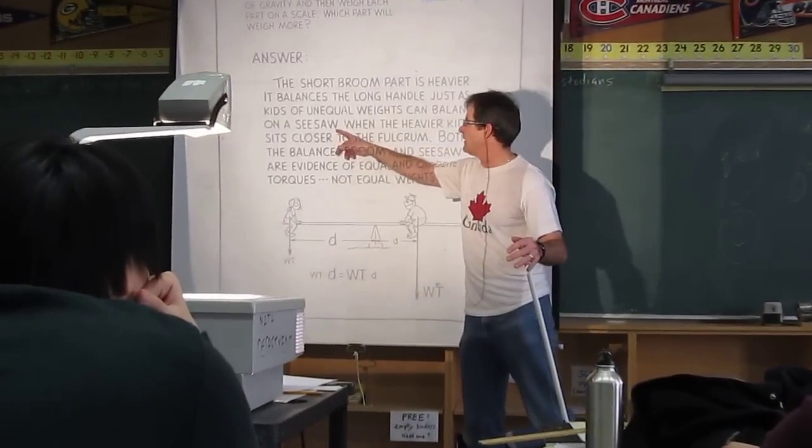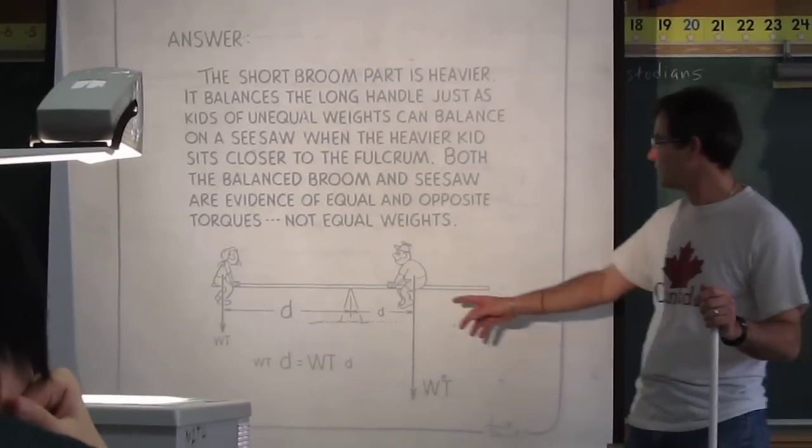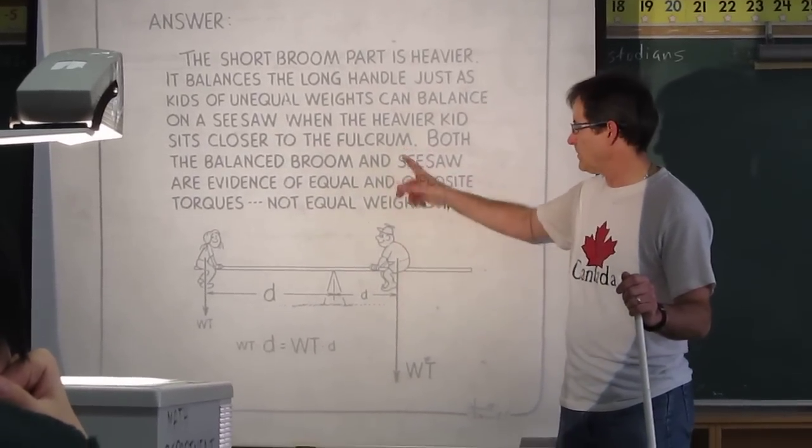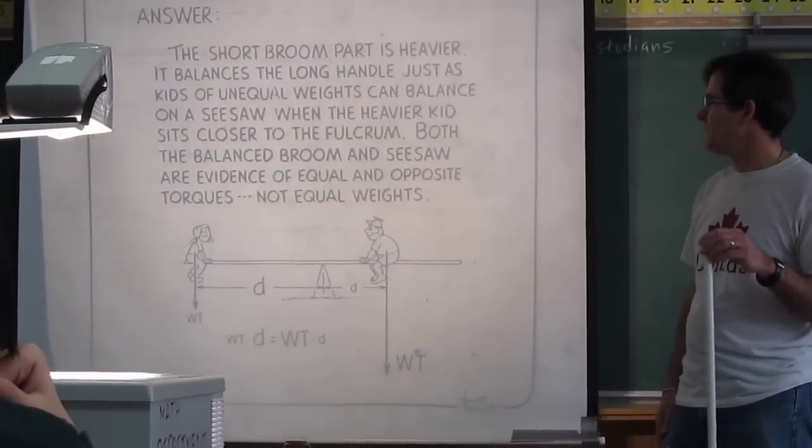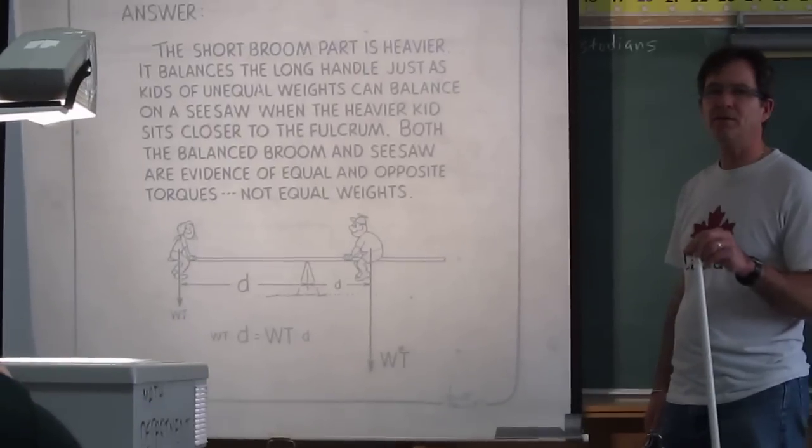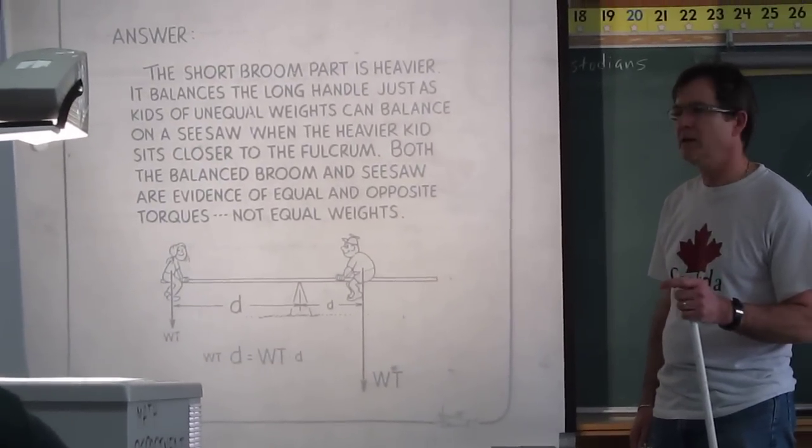There's that word saw again, different meaning. When the heavier kid sits closer to the fulcrum, the fulcrum is the balance point. Both the balanced broom and the seesaw are evidence of equal and opposite torques, not equal weights.